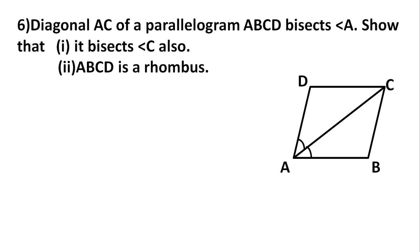The figure is given with vertices ABCD. What is given in the question? ABCD is a parallelogram. Parallelogram means opposite sides are equal and parallel. We need to show that in the first part, AC bisects angle C also. It is given that AC bisects angle A.